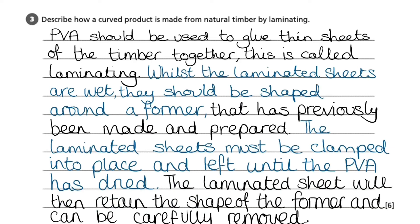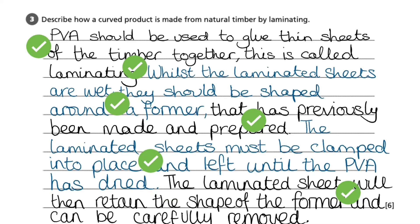To conclude this answer, I have provided confirmation that the process is now finished and that the desired curve would be formed and can be carefully removed once the PVA has dried. We were aiming for at least 6 points to achieve the 6 marks available, and we have managed to provide 6 points which should ensure full marks. It is always worth re-reading and re-checking your answers before moving on to see if there are any further details you may have forgotten.